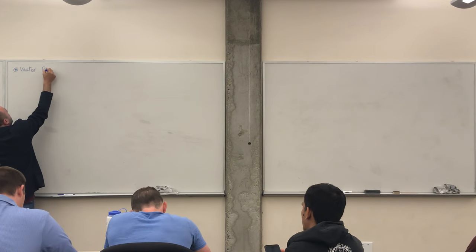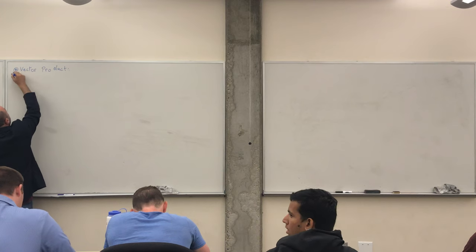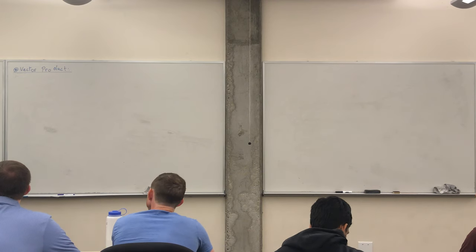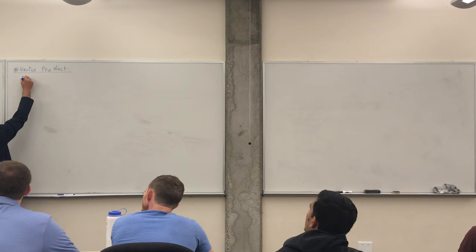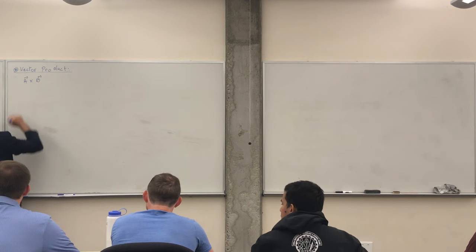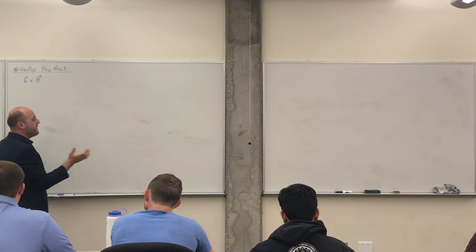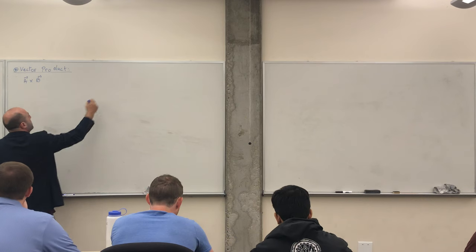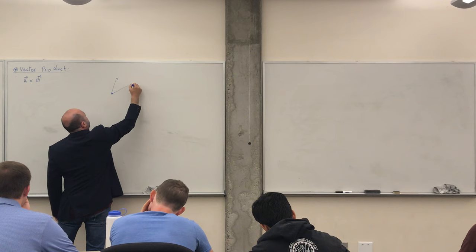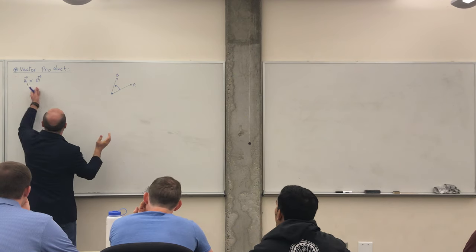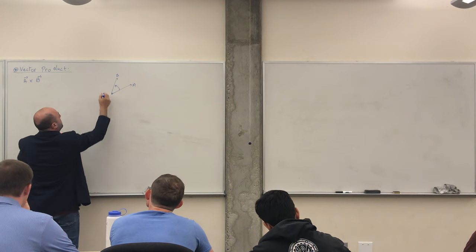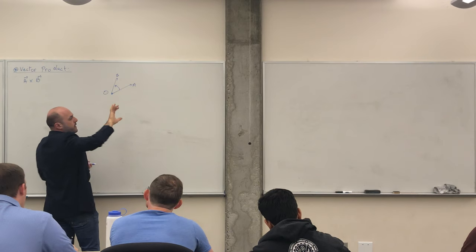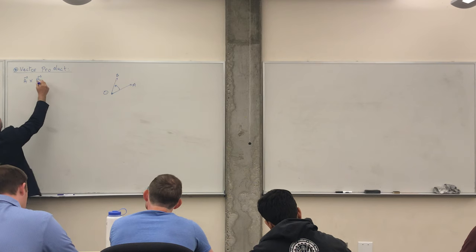We defined two types of products for vectors: the dot product, which is the scalar product resulting in a scalar quantity, and the vector product, defined as a cross b. That's a vector that points either out of the plane or into the plane based on the right-hand rule. If a cross b, you start from a and go to b — that's a vector pointing out of the board. For b cross a, it points into the board.